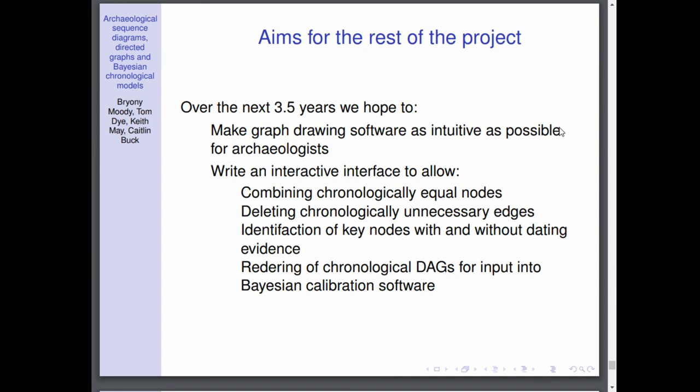We also want to allow them to be able to identify key nodes with dating evidence and those without what they want to estimate dates for. Then we also need software to render the chronological DAGs ready for input into existing Bayesian calibration software such as BCal and OxCal.